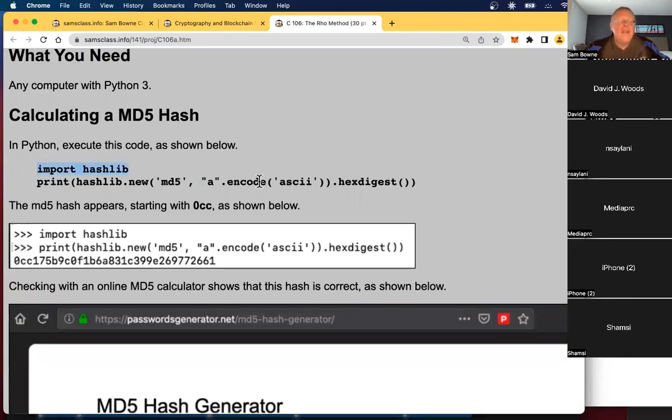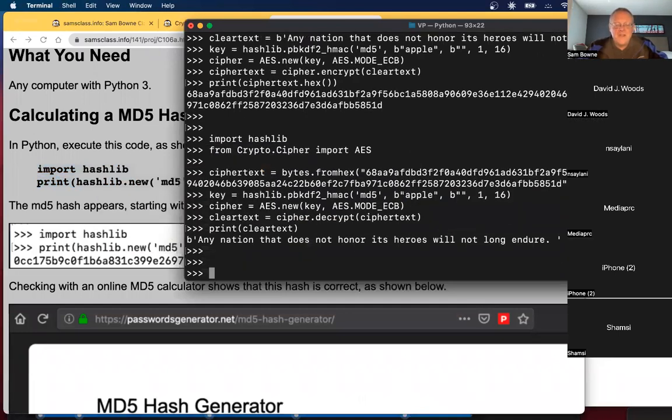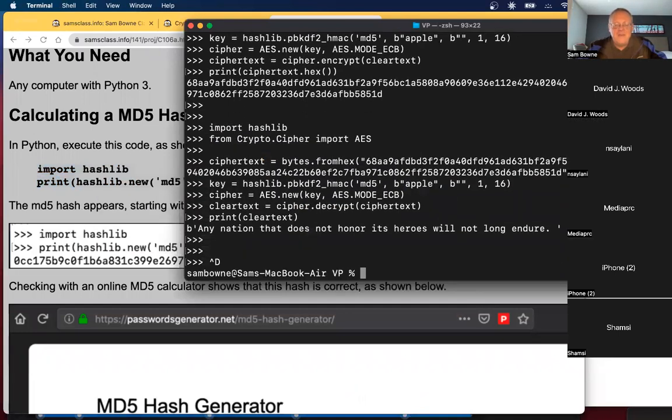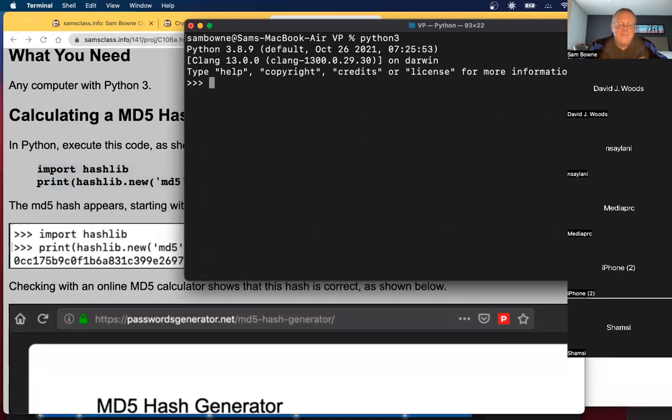So here we're going to calculate an MD5 hash in Python. So I'll just exit and come back to clear the screen and then run Python 3. All right. So I import the hashlib and we've done this before.